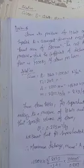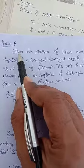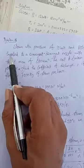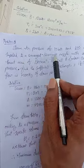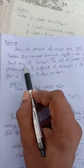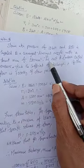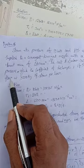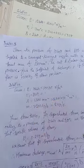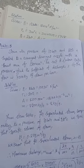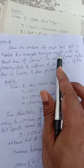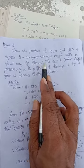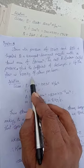Now we go to another problem. Steam at a pressure of 10 bar and 210 degrees Celsius is supplied to a convergent-divergent nozzle with a throat area of 1500 mm square. The exit pressure is below critical pressure. Find the coefficient of discharge if the flow is 7200 kg of steam per hour.